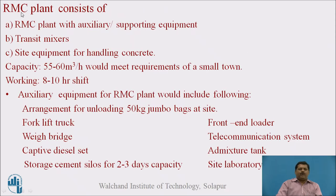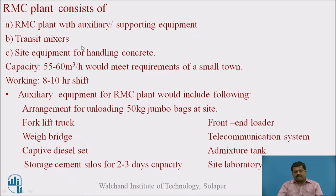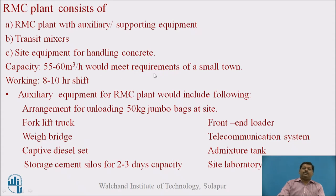Now let's see what an RMC plant consists of: A) RMC plant with auxiliary or supporting equipment, B) Transit mixers, C) Site equipment for handling. For a small town, the capacity of the RMC plant — 55 to 60 cubic meters per hour — would meet requirements. The working of the RMC plant can be considered as 8 to 10 hours per shift.